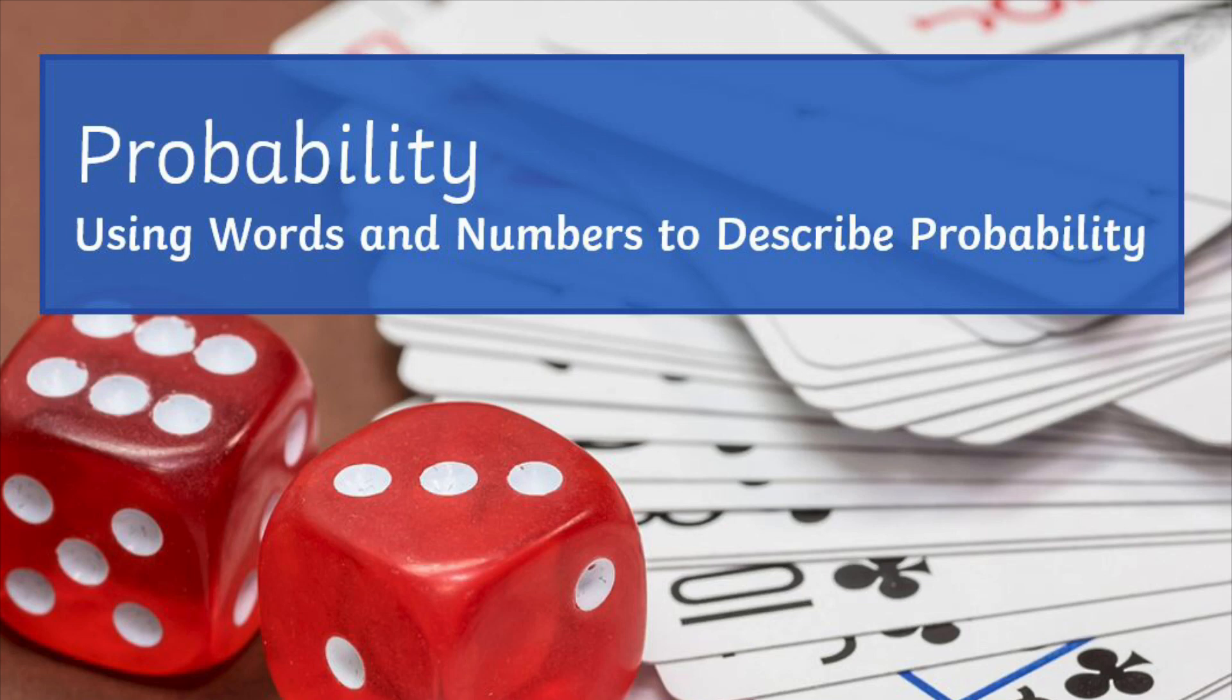So what is probability? Probability or chance is how likely something is to happen. If something has a low probability, it is unlikely that this event will happen. If something has a high probability, it is likely that this event will happen.